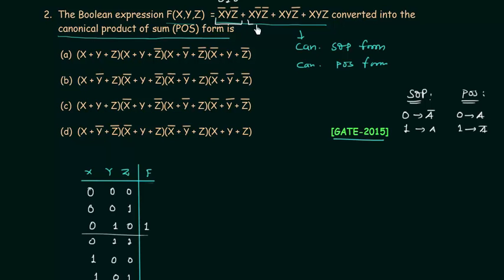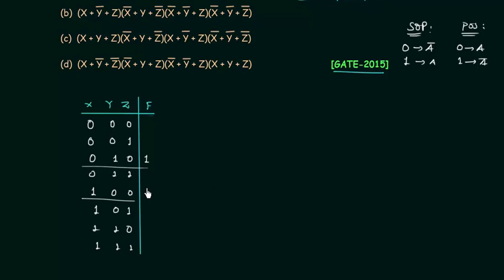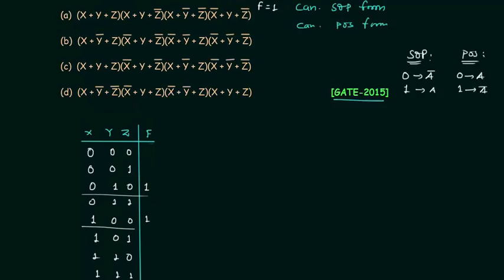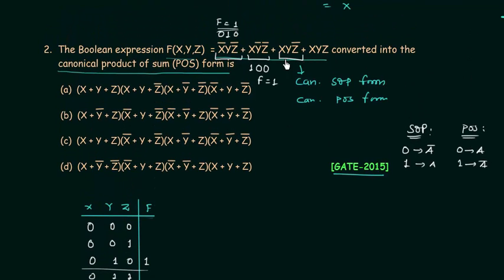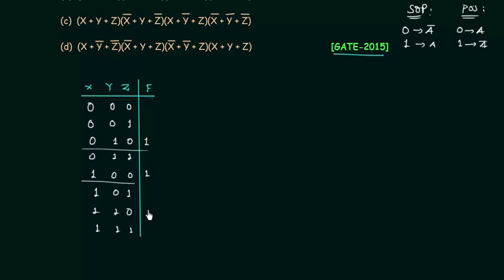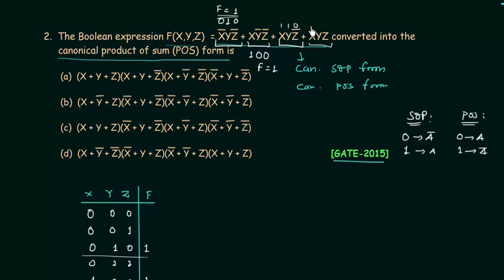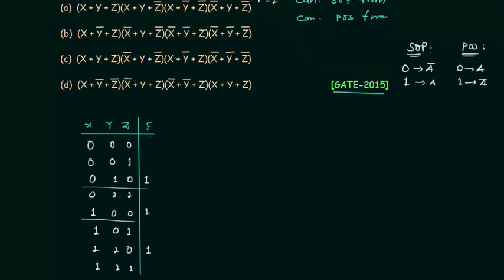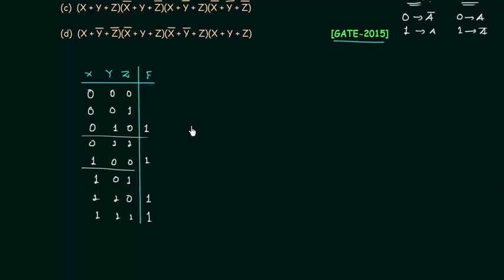The next minterm is x, y complement, z complement — meaning x=1, y=0, z=0 — so f equals 1. For the third minterm, x=1, y=1, z=0, the output is also 1. The last minterm is x, y, z — meaning x=1, y=1, z=1 — so the output equals 1. The rest of the conditions produce output equal to 0. This is the complete truth table.